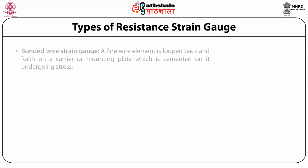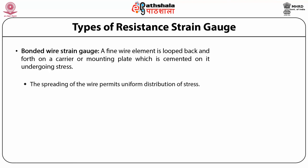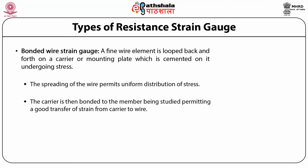The bonded wire strain gauge has a fine wire element which is looped back and forth on a carrier or mounting plate cemented onto the member undergoing stress. The spreading of the wire permits uniform distribution of stress and the carrier is bonded to the member being studied, permitting good transfer of strain from the carrier to the wire.